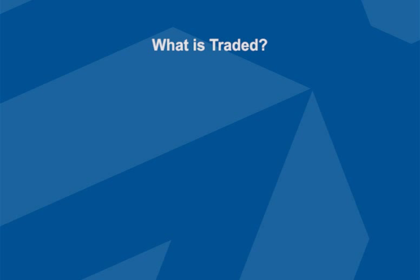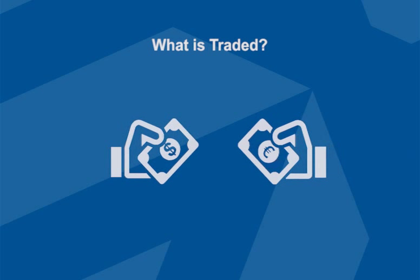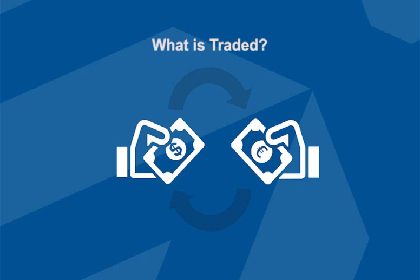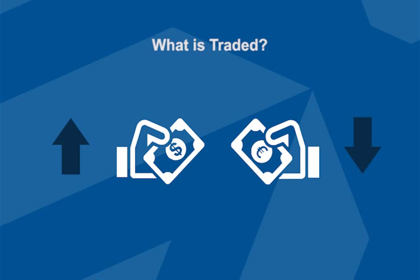In Forex, what you're actually trading is one currency for another. For example, if you think the Euro will go up against the USD, you would buy the Euro/USD. However, if you think the Euro will decrease against the USD, you can sell the Euro/USD.